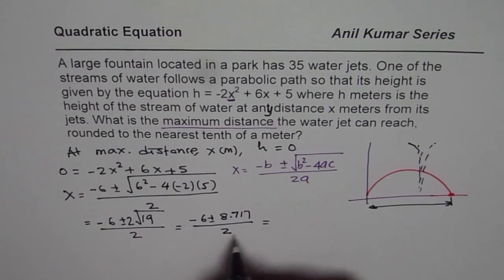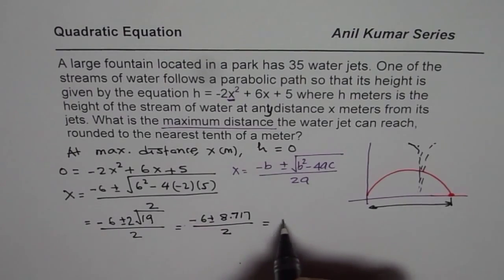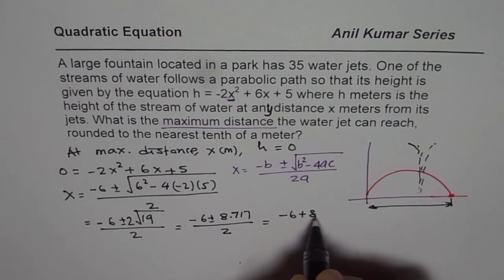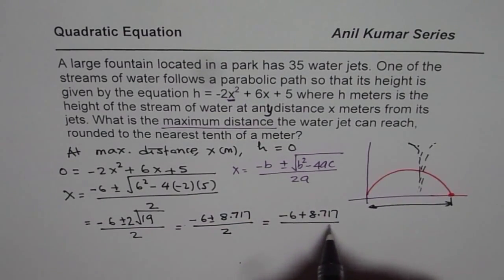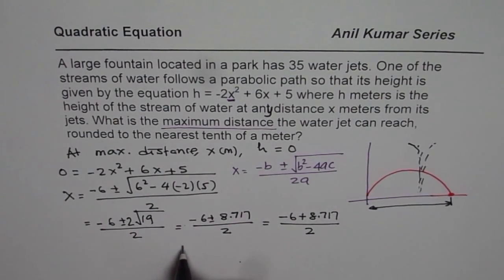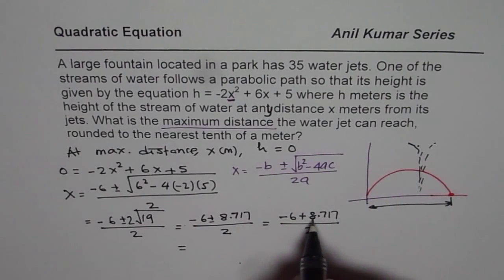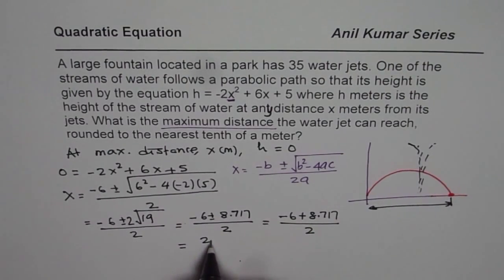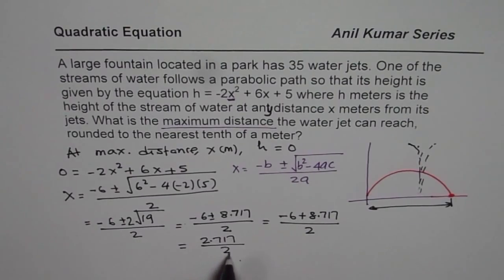So what I did was I took minus 6 plus 8.717 divided by 2, since the distance cannot be negative. And that gave me, let me write down here, so when you do this you get 2.717 divided by 2.